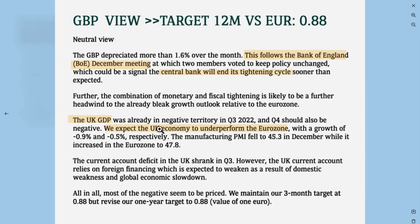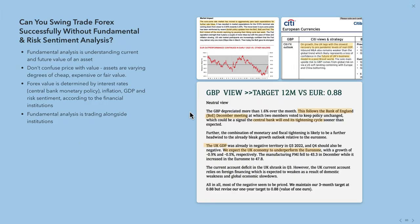Banks publish analysis explaining why their 12-month target for the pound versus the euro would be, for example, 0.88. It's not about speculating on what you see on the chart. Price does play a role, but value is what drives price over the medium to long term. In the short term, price is typically driven by liquidity and market makers. The market is primarily for big institutions like banks to do business in currencies — speculation is secondary.